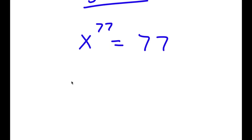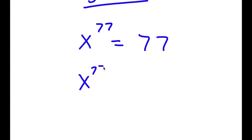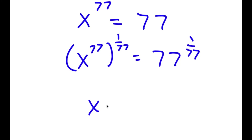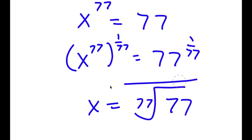To solve x to the power of 77 equals 77, I'm going to take the power of 1 over 77 on both sides. So I have x to the power of 77 to the power of 1 over 77 is equal to 77 to the power of 1 over 77, giving x is equal to 77 to the power of 1 over 77.